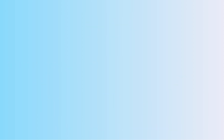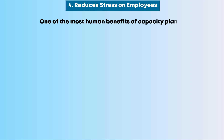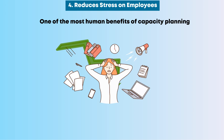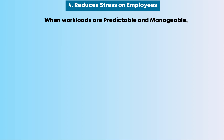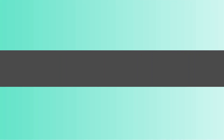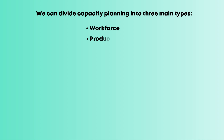Fourth, capacity planning reduces stress on employees. One of the most human benefits is that it reduces burnout. When workloads are predictable and manageable, employees perform better. We can divide capacity planning into three main types: workforce, product, and tool. Together, these ensure your business has the right mix of people, materials, and equipment to meet both current needs and future demand.